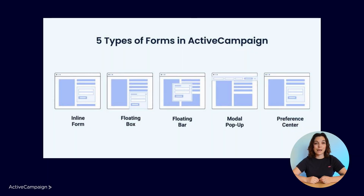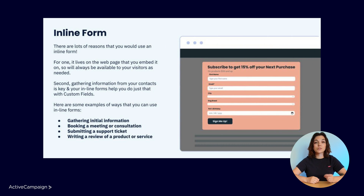There are five types of forms in ActiveCampaign. The inline form is the most commonly used and versatile type. It's embedded directly into your webpage and you can gather contact data using those custom fields.